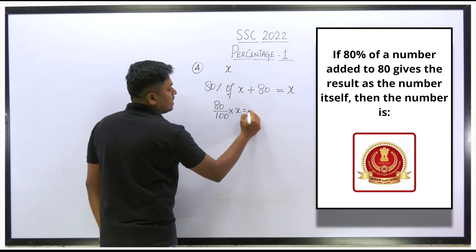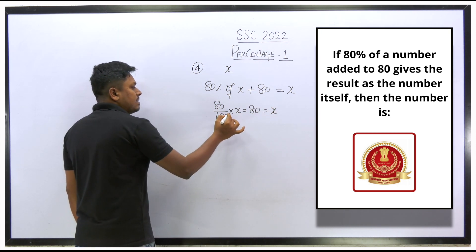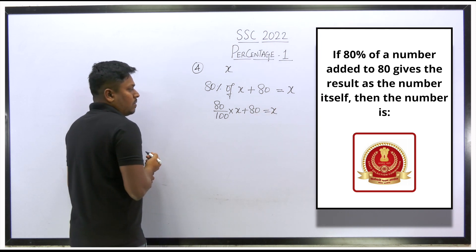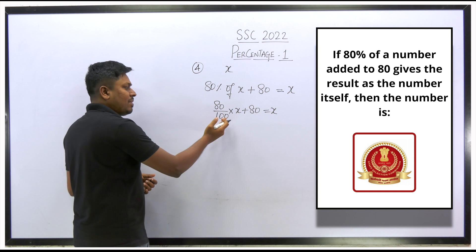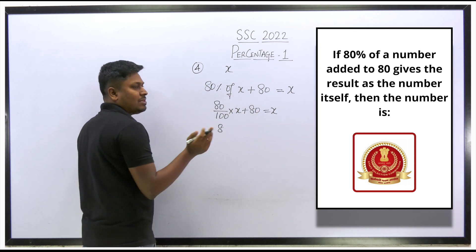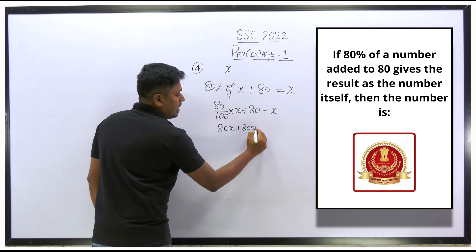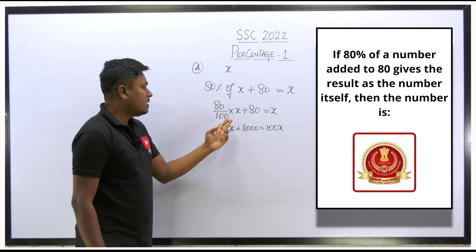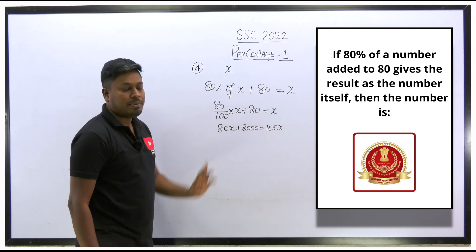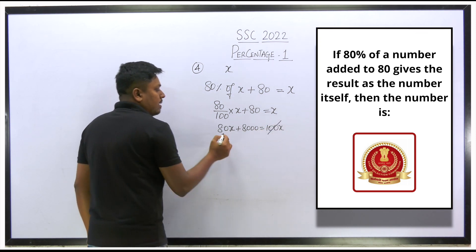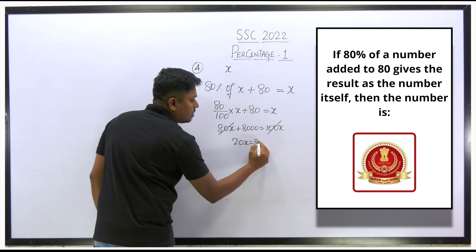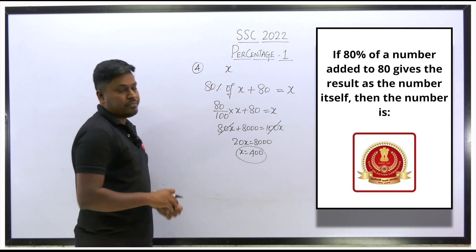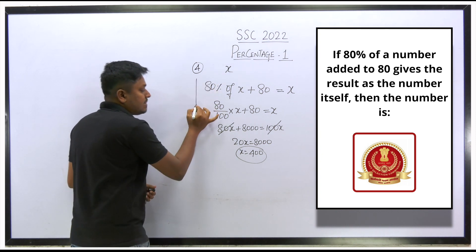Setting up the equation: (80/100)x + 80 = x. Taking LCM of 100: 80x + 8000 = 100x. So 20x = 8000, giving x = 400. The number is 400.